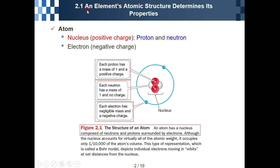The first topic is the atom. An atom is composed of two parts: the nucleus and the electron part. Figure 2.1 summarizes that an atom has a nucleus composed of the proton, which is positively charged, and the non-charged neutron. The nucleus is surrounded by electrons.